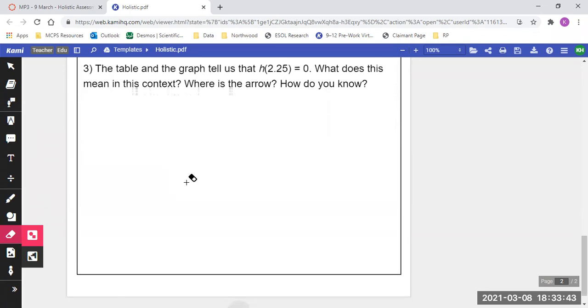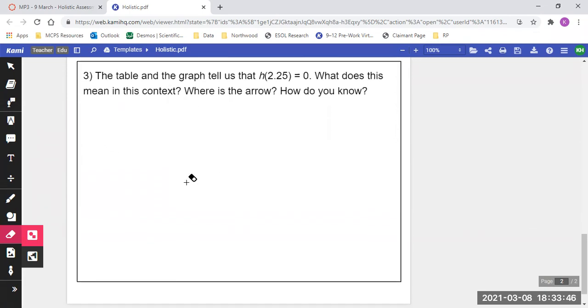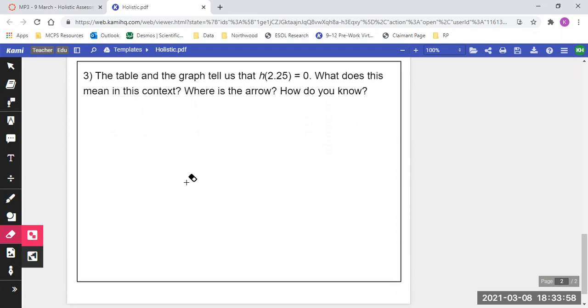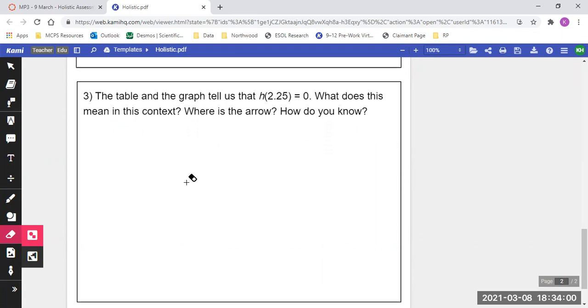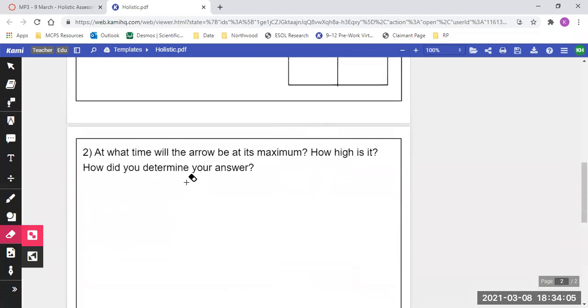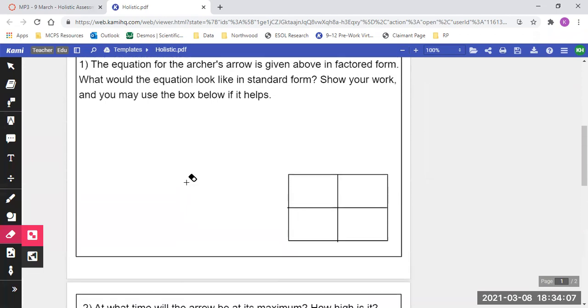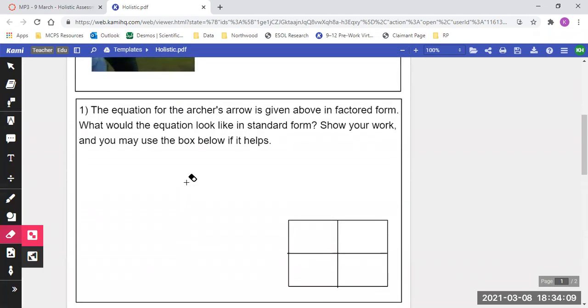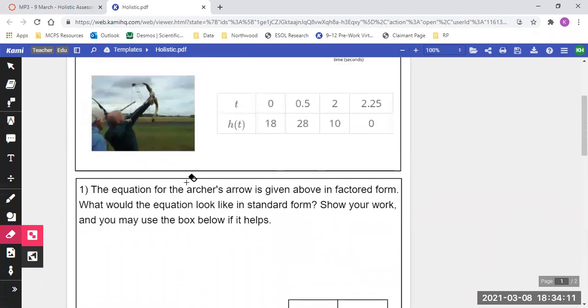Finally, we have our last question here. The graph and table tell us that h at 2.25 equals zero. What does this mean in this context? Where is the arrow, and how do you know? So those are the three questions that we want you to answer today, and yes, that is all I'm looking for you to do right now because it is important that you understand this and that you can explain yourself.